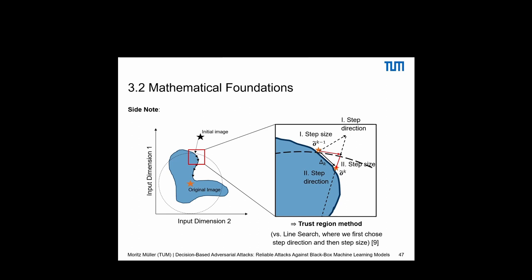As a side note, what we did here is an instance of a trust region method: we first define the step sizes via parameters delta and epsilon, then take the step direction guided by the proposal distribution (orthogonal perturbation) and then by the straight-line distance to the original image. This contrasts with line search, where we first choose the step direction and then the step size.